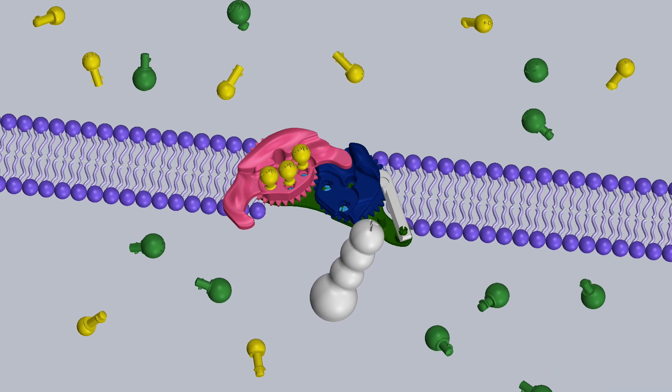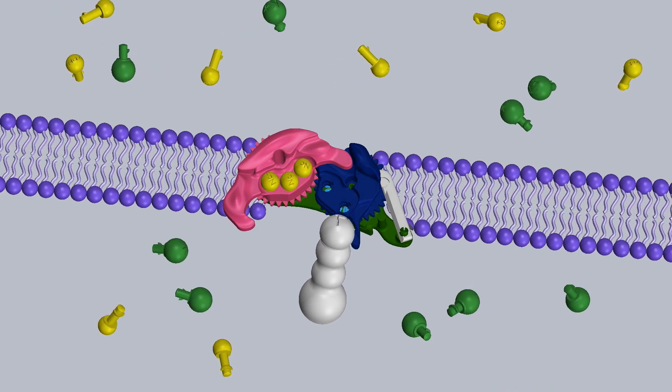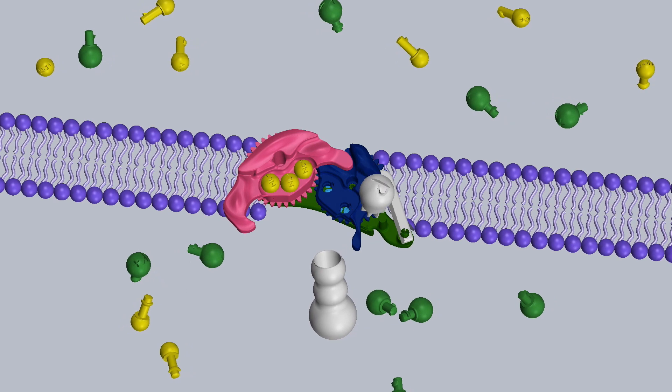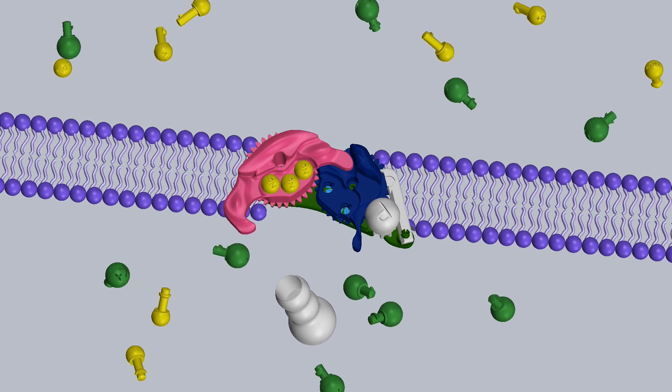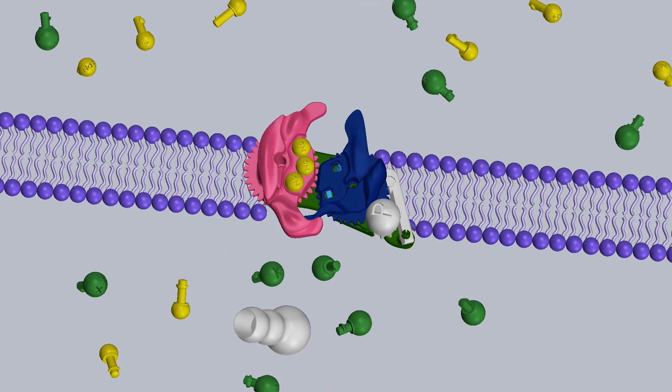To accomplish this, three sodium ions bind to the protein in its resting position. A phosphate from ATP then binds to the protein, providing the energy needed to change the shape of the protein channel.